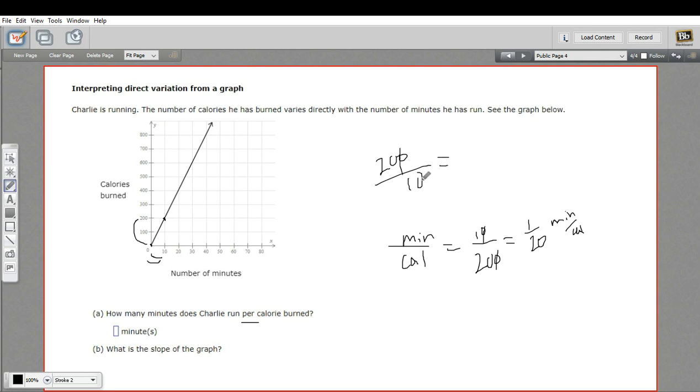So our slope there after we cancel would be 20. So this was 1/20th of a minute. And this was a slope of 20. So that's a little bit of work with the graph of a direct variation relationship.